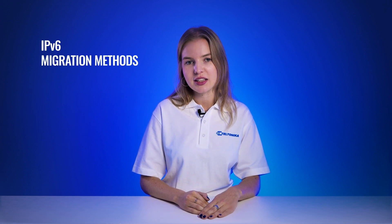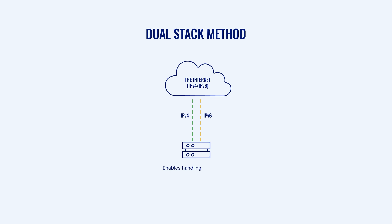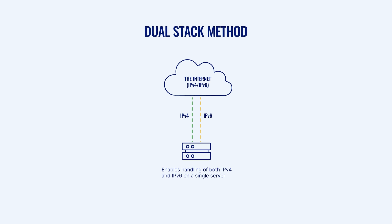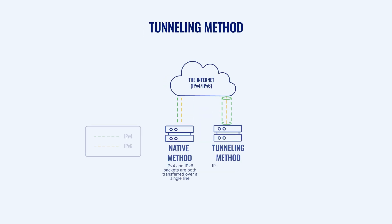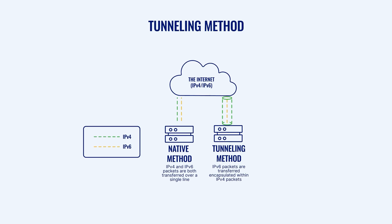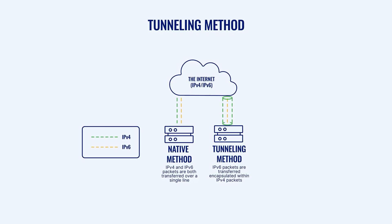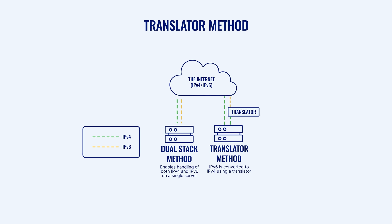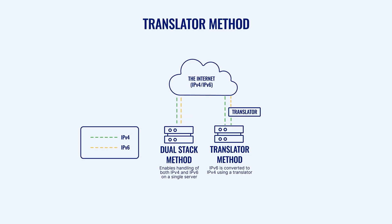IPv4 and IPv6 will coexist for many years, if not decades, but transitioning to IPv6 is inevitable in the long run. To make this transition as smooth as possible, a few mechanisms have been deployed: dual-stack, tunneling, and translation. Dual-stack allows networking devices to run on both IPv4 and IPv6 simultaneously, enabling communication over either protocol depending on the network. Tunneling wraps IPv6 packets in IPv4 packets, allowing them to pass through IPv4 networks. Translation converts packets between IPv4 and IPv6, enabling communication between devices running only on one of the protocols.